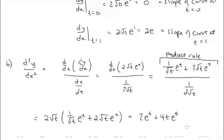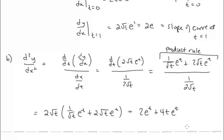Simplifying, we get 2e to the t plus 4t e to the t for the second derivative.